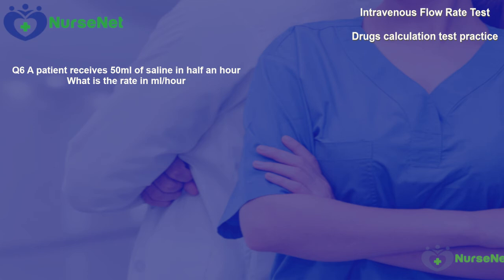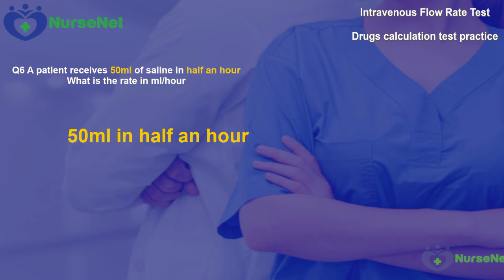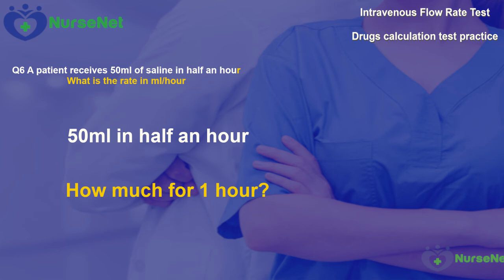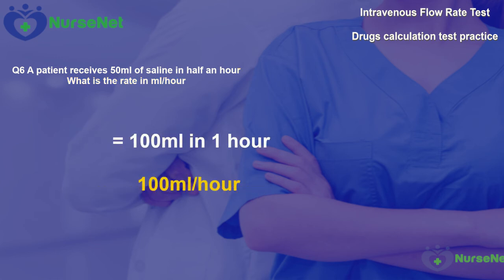Question 6. A patient receives 50 millilitres of saline in half an hour. What is the rate in millilitres per hour? This is a fairly straightforward question. The patient receives 50 millilitres in half an hour, and we need the rate per hour. We simply multiply 50 millilitres by 2, since two half-hours equal one hour. So, 50 multiplied by 2 gives us 100 millilitres per hour.